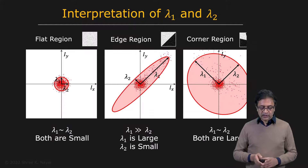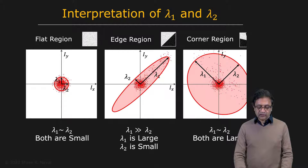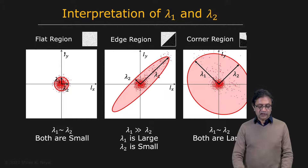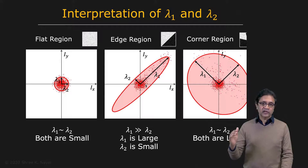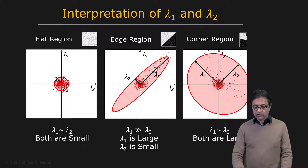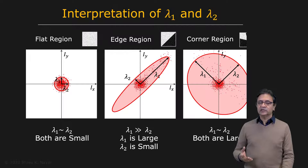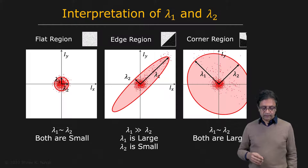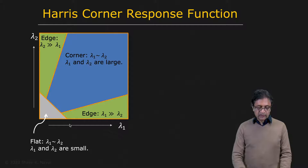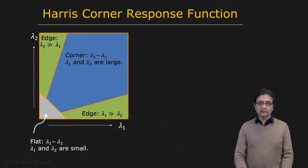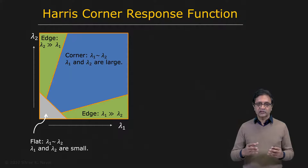Let's see how this works for our three regions. For the flat region, we get small values for both lambda 1 and lambda 2 because of the compact cluster, so we call it a flat region. For the edge, we get a very large lambda 1 and a very small lambda 2. For the corner, we get large values for both lambda 1 and lambda 2. We classify the region in lambda 1, lambda 2 space: near the origin is flat, lambda 1 much greater than lambda 2 is an edge, and both large is a corner.